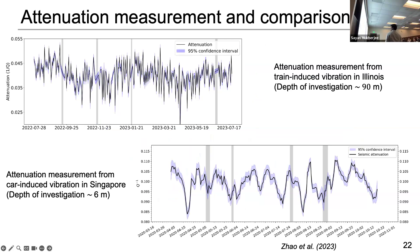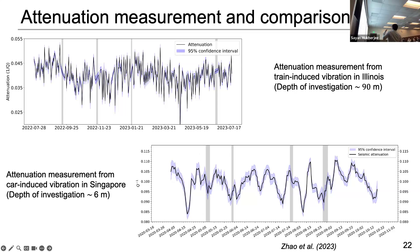First, just to make sense of the attenuation measurement, I compared it with an attenuation measurement our group did in Singapore. There, the depth of investigation was approximately six meters. You can see that the Q-inverse values are about 100 times higher than the attenuation measurement in Illinois. That's basically because our frequency band is so narrow and small that the depth of investigation is approximately 90 meters, so the inverse of Q will be way smaller than what was measured in Singapore.